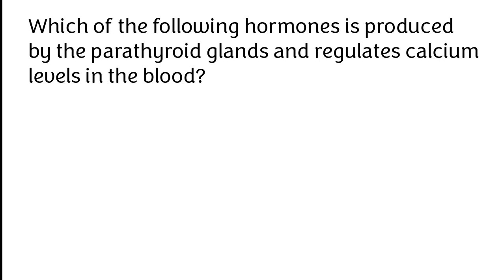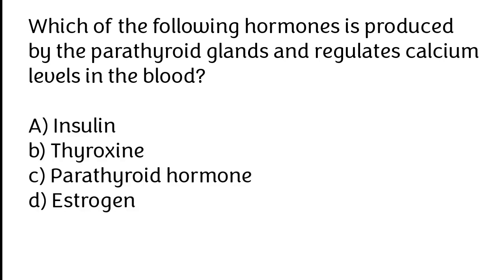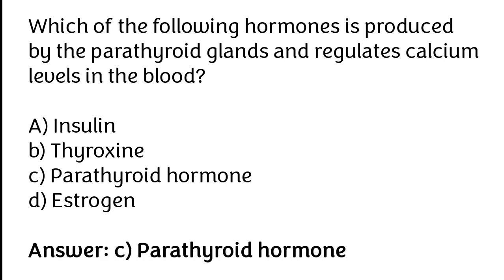Which of the following hormones is produced by the ferrothiride glands and regulates calcium levels in the blood? Insulin, Tyroxin, Ferrothiride hormone, Estrogen. The correct answer is Option C. Ferrothiride hormone is produced by the ferrothiride glands and regulates calcium levels in the blood.